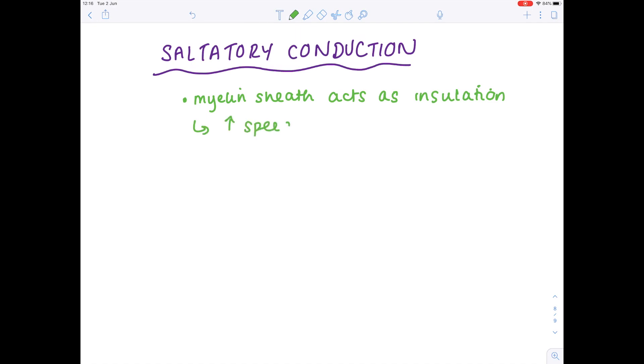So looking more closely at the nodes of Ranvier and the myelin sheath, these are important for saltatory conduction. So effectively, the myelin sheath acts as insulation. It increases the speed of conduction of the electrical impulses.